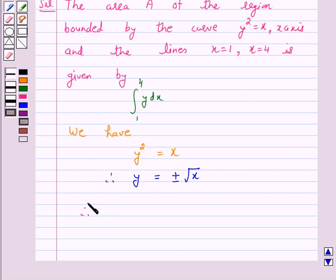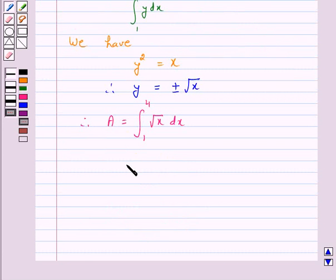Therefore, area = integral from 1 to 4 of √x dx, and this is equal to x^(3/2) over (3/2), evaluated from 1 to 4.